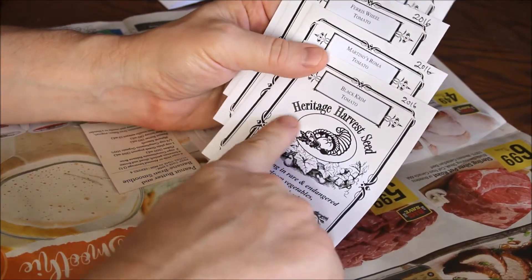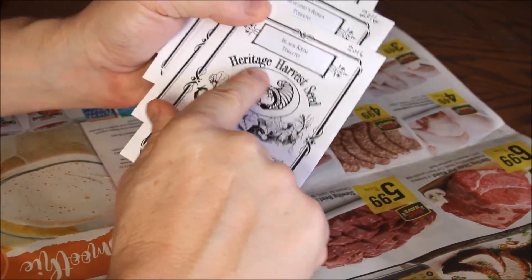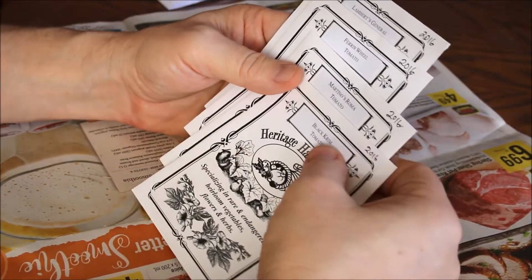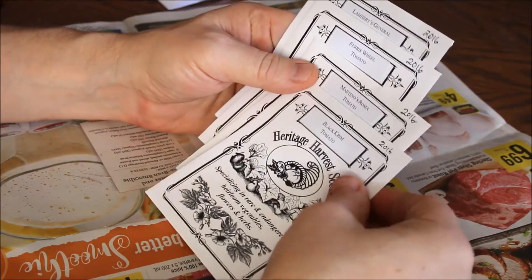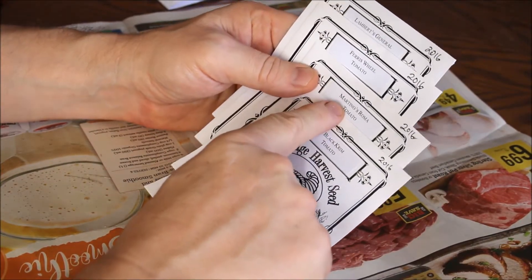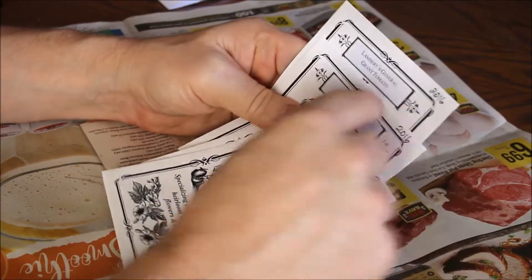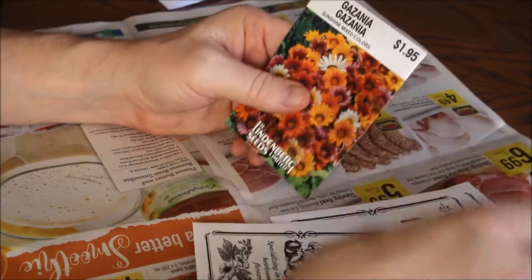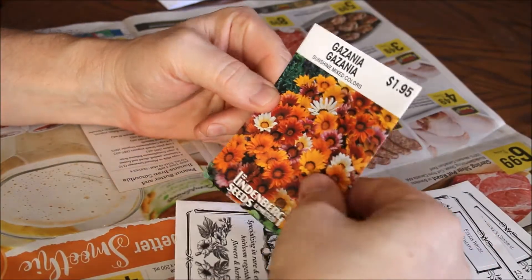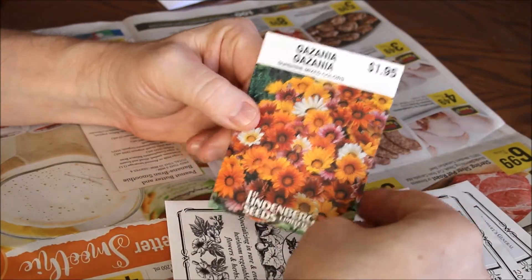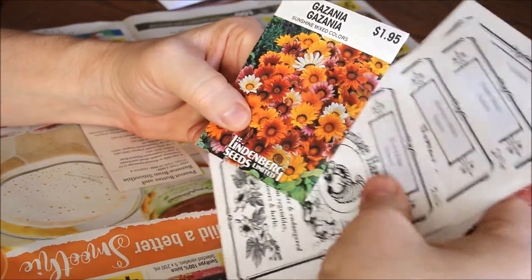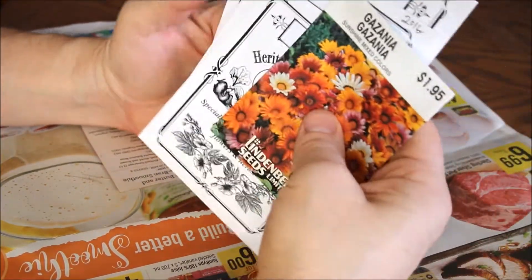I found some from Heritage Harvest Seed—these are all heirloom tomatoes of various types. We'll be doing some Black Krim, Martino Roma, Ferris Wheel tomato, Lambert's General Grant tomatoes, and I'm going to be starting off some gazanias for my wife at the same time. So let's get started.